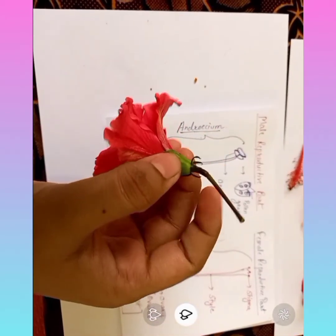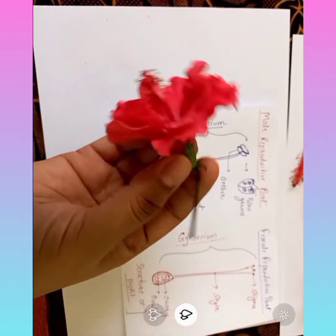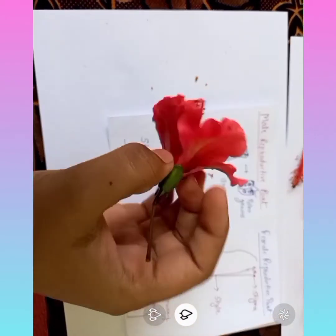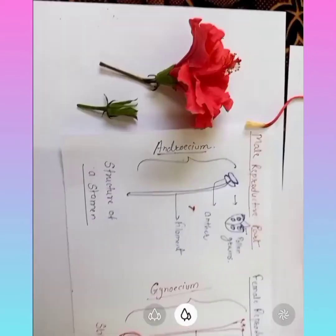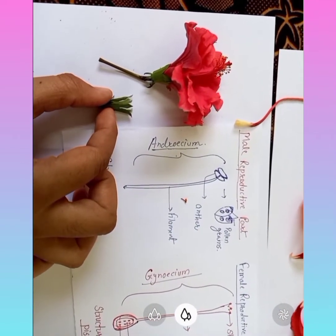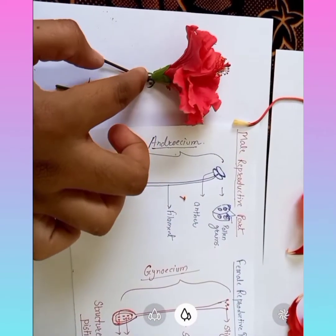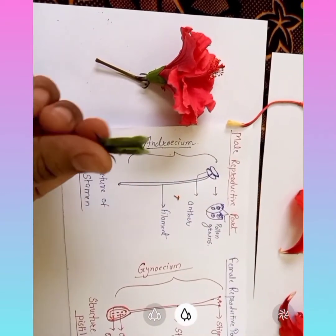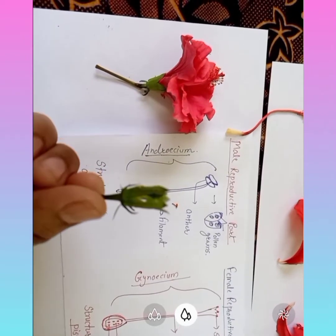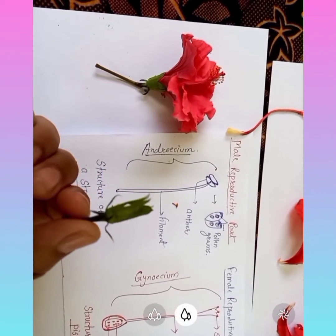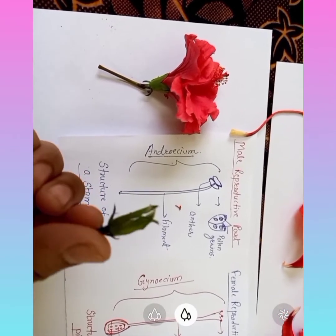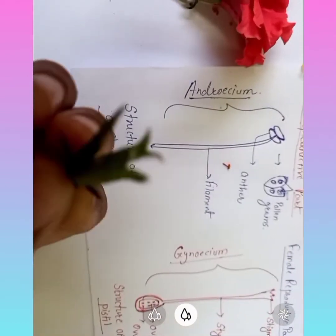All the whorls are arranged with the support of this thalamus. After the pedicel, the next structure is the sepal. The outermost whorl of a flower, which is green and protects the other parts in the bud stage, comprises the sepal. The sepals are collectively called the calyx.